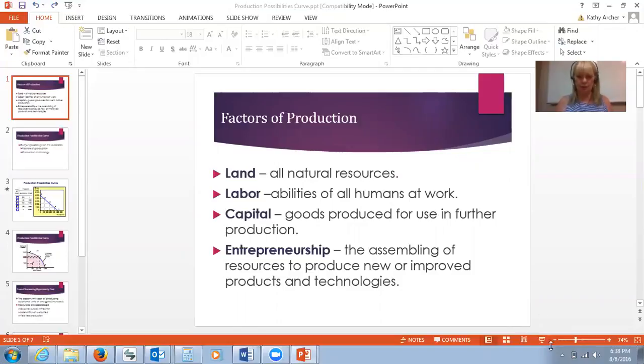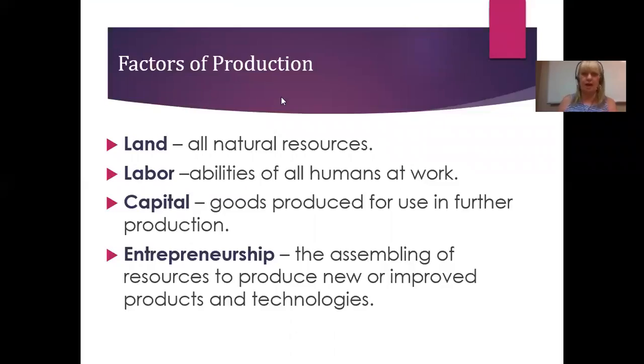You remember last time we were together we were talking about factors of production. We talked about that the factors of production include land, which is all the natural resources within the land, water, minerals, oil, anything that you might find there. Labor includes all the abilities that the humans bring to work. It's the people themselves and all of their abilities. Capital includes all the goods produced for use in further production. It's much more than money. It has to do with equipment and buildings and all those kinds of things. And finally, entrepreneurship, the assembling of these resources to produce new or improved products and technologies.